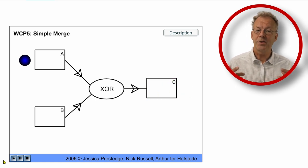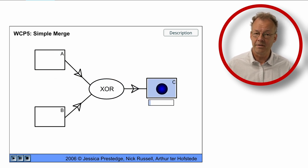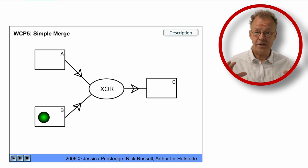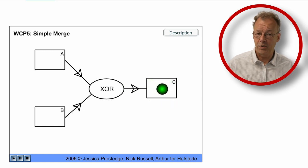Note that the possibility that one token arrives on each branch is left out. This would lead to the undesired behavior that the subsequent task and all that follows after would be executed twice.